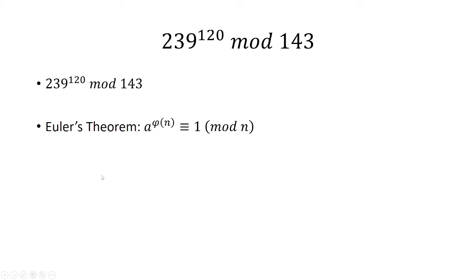In order to find this, we need to use Euler's theorem, and that's a raised to the Euler-Totient function of n is congruent to 1 mod n. n here is going to be 143, so we need to find the Euler-Totient function of 143.